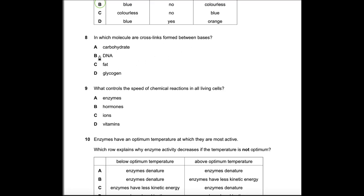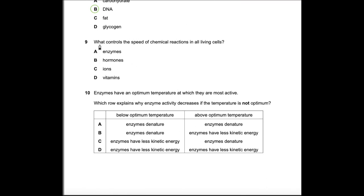Question 8: In which molecule are cross-links formed between bases? That is DNA. Question 9: What controls the speed of chemical reactions in all living cells? That is enzymes — not hormones, ions, or vitamins, as none of those control the speed of chemical reactions.